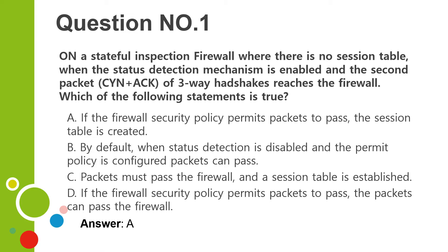B. By default, when status detection is disabled and the permit policy is configured, packets can pass. C. Packets must pass the firewall, and a session table is established. D. If the firewall security policy permits packets to pass, the packets can pass the firewall. Answer: A.